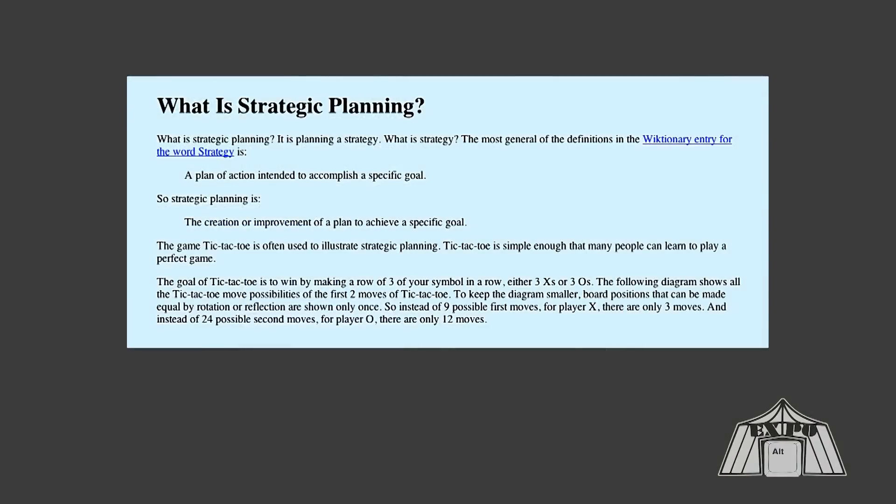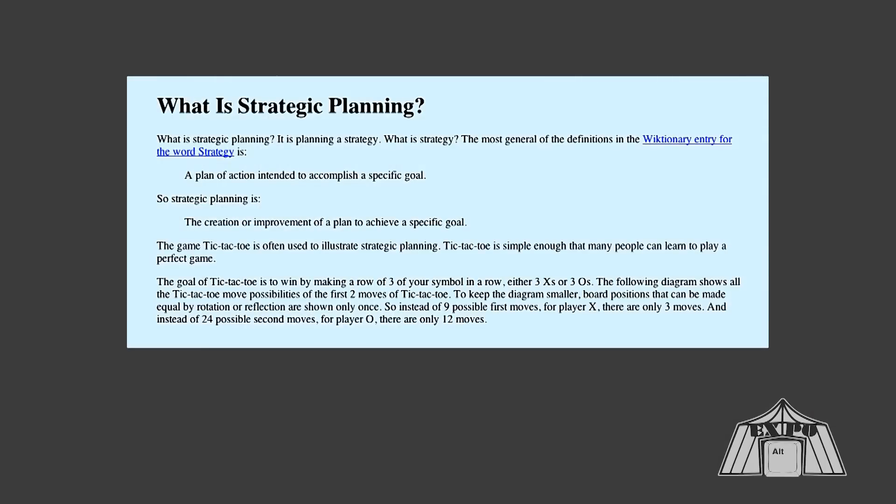And this talk is a summary of what I've come up with, my thoughts on what's gone wrong with strategies, how we might make them work better, and possibly make them work very well. So first, I'd like to talk just a little bit about what is strategic planning. The wiktionary defines it as a plan of action intended to accomplish a specific goal. That's what strategy is. So strategic planning is the creation or improvement of a plan to achieve a specific goal.